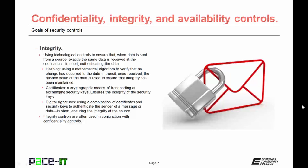Now let's move on to integrity. This is using technological controls to ensure that when data is sent from a source, exactly the same data is received at the destination. In short, integrity is authenticating the data. This can be achieved through hashing — hashing is using a mathematical algorithm to verify that no change has occurred to the data in transit. Once received, the hashed value of the data is used to ensure that the integrity of that data has been maintained.